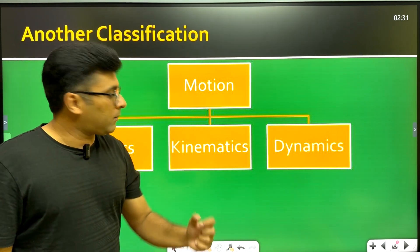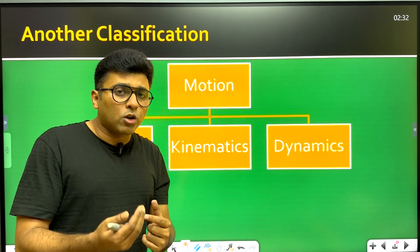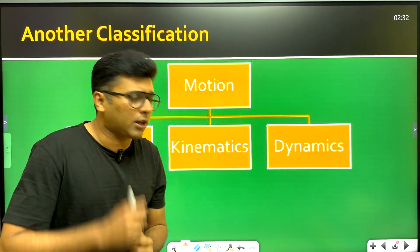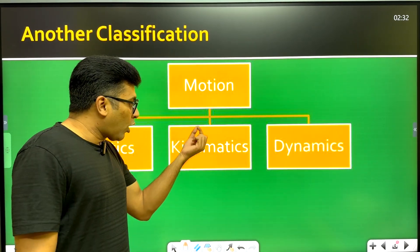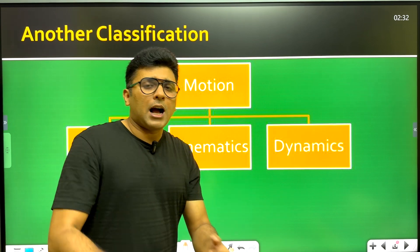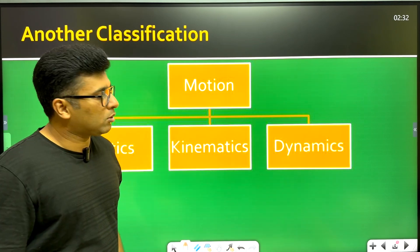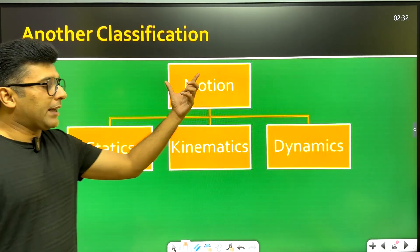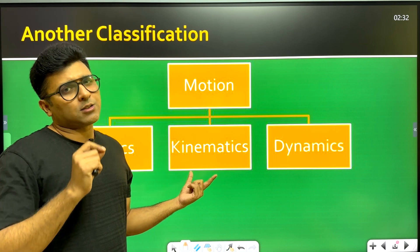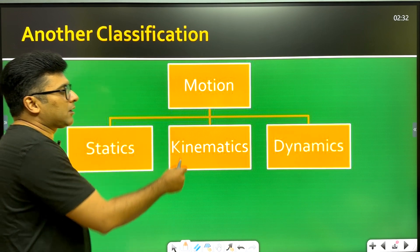Kinematics deals with the motion of an object without studying the cause of that motion. Dynamics, on the other hand, studies the cause of the object's movement. So the major difference is: kinematics studies how the object moves, while dynamics studies why the object moves. In this chapter, we mainly discuss kinematics and not dynamics.